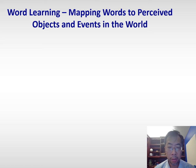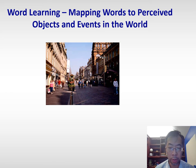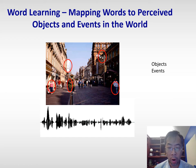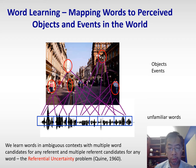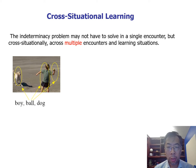We know that learning words is a challenging task. Imagine that you're in a foreign country — you perceive a visual scene and meanwhile hear a continuous spoken utterance from a native speaker. Assuming you can parse the visual scene into individual objects and events, and segment continuous speech into individual words, you still need to find out which word goes to which object or event. This is called the referential uncertainty problem.